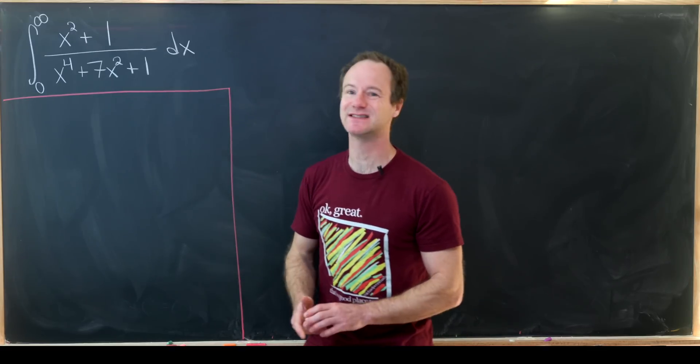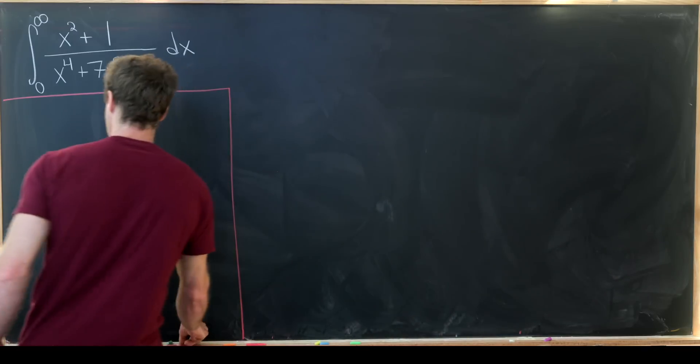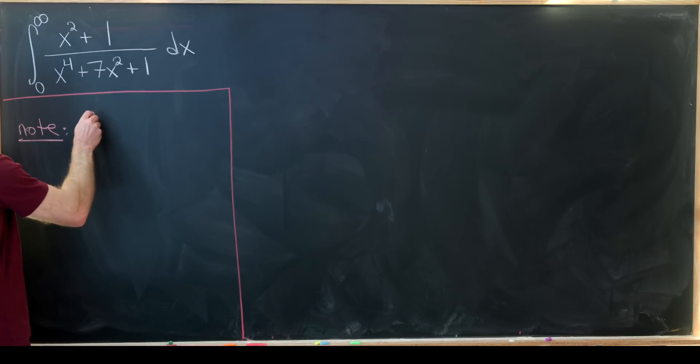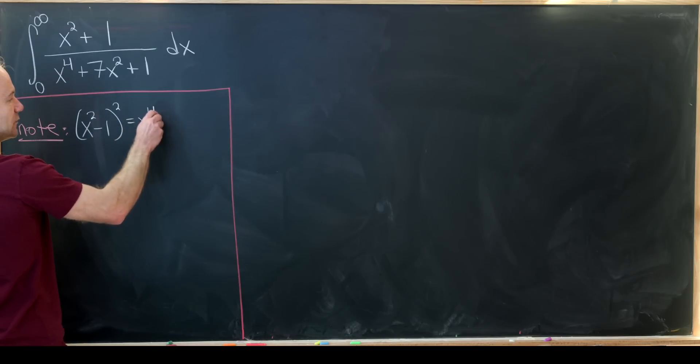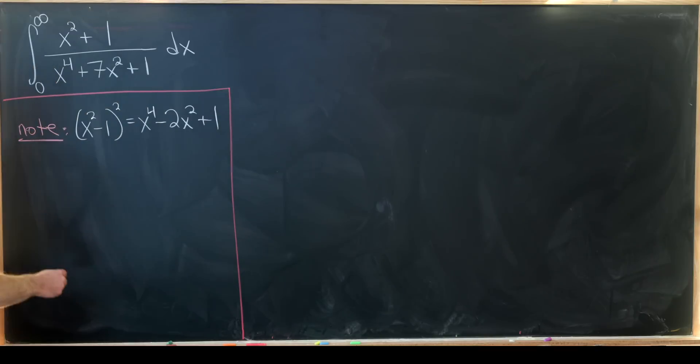I'll start by doing something similar to completing the square in the denominator. Let's begin with the following observation: x squared minus one quantity squared equals x to the fourth minus 2x squared plus one. That's what we get from multiplying this out.